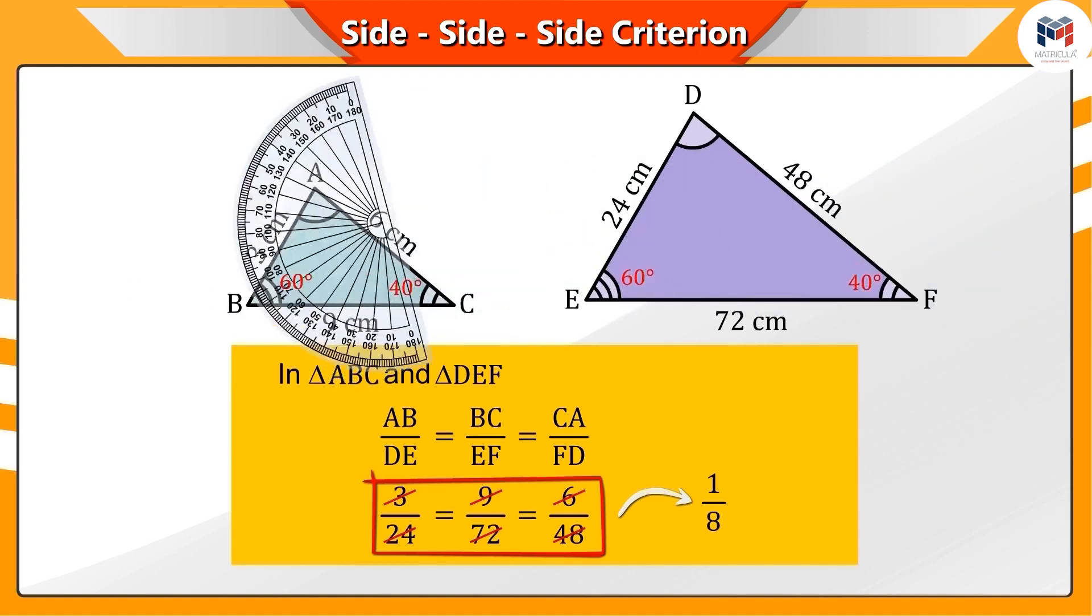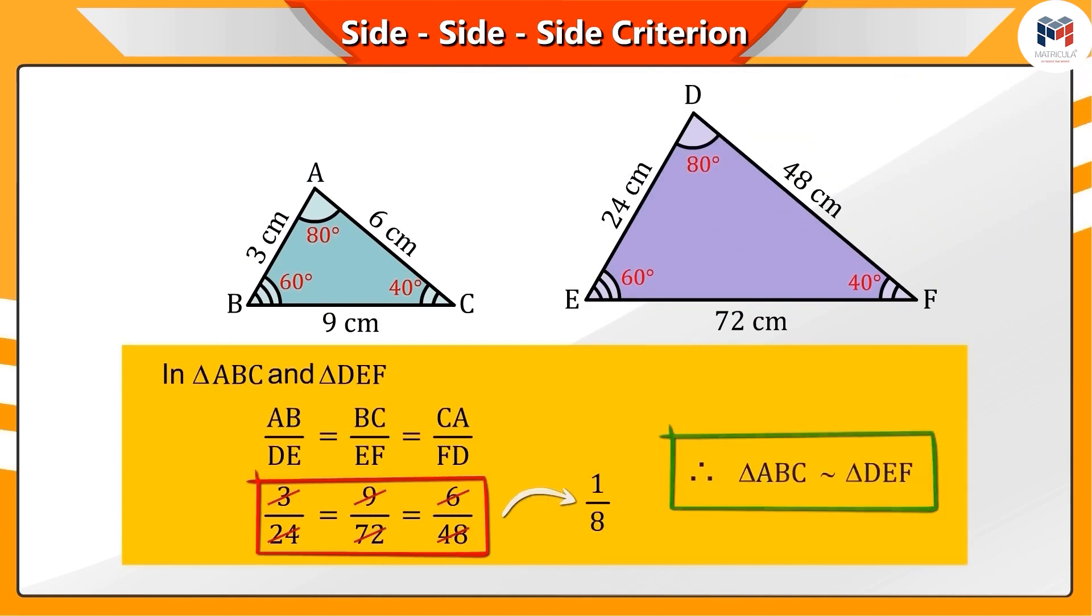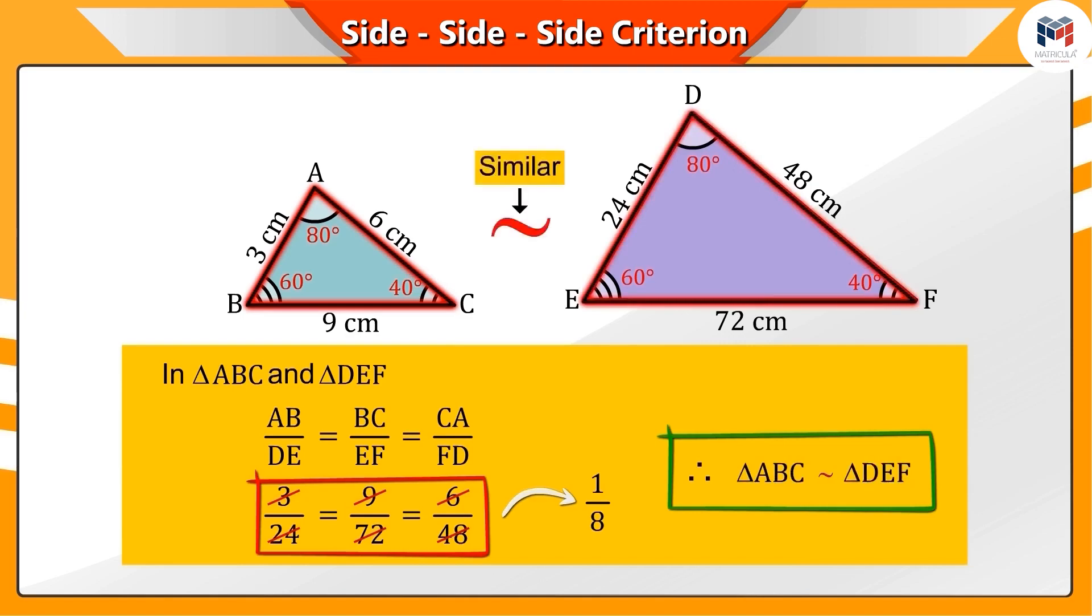the corresponding angles of these triangles are also equal. This way, we can say that triangles ABC and DEF are also similar.